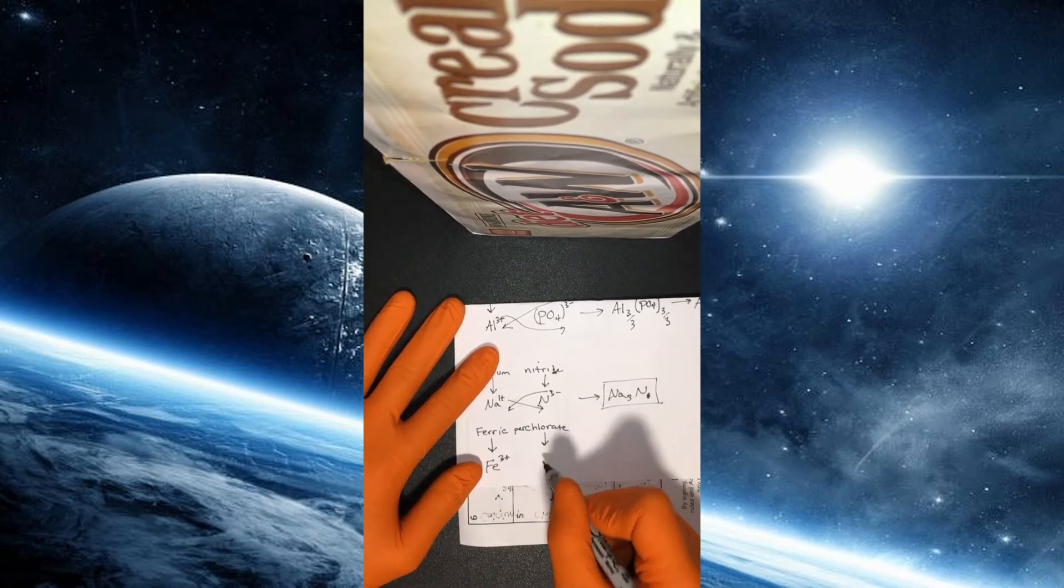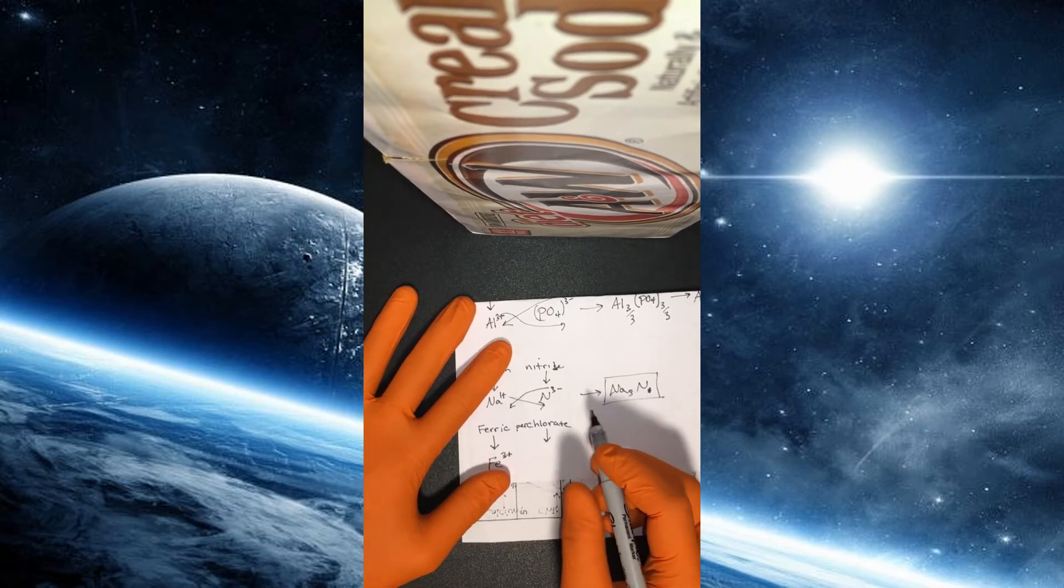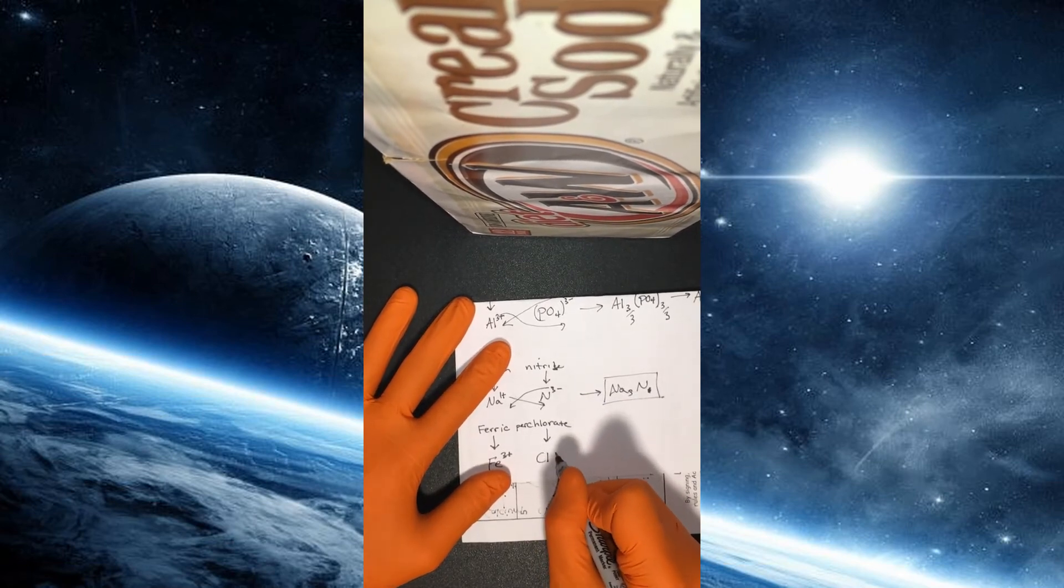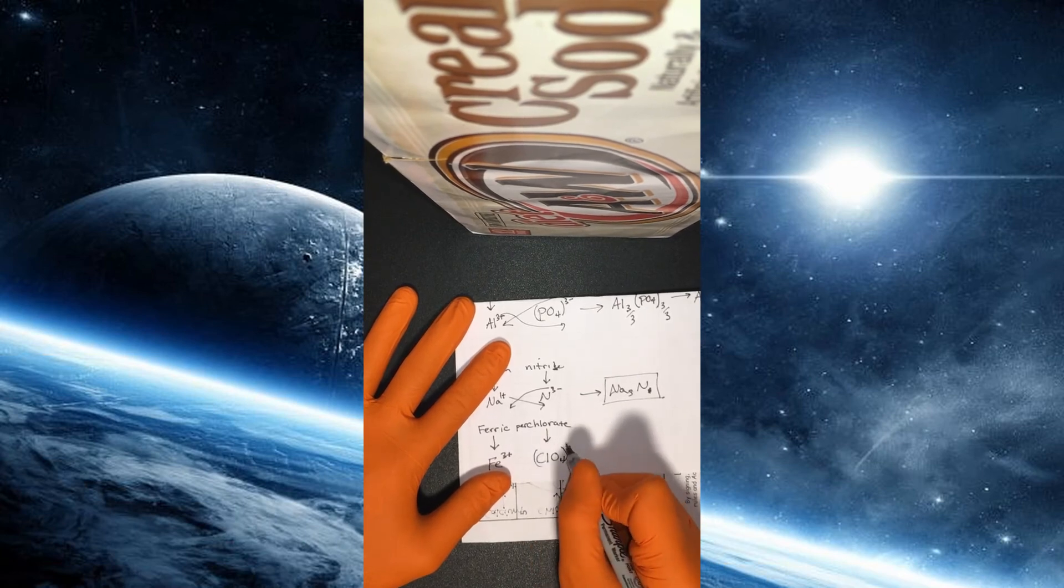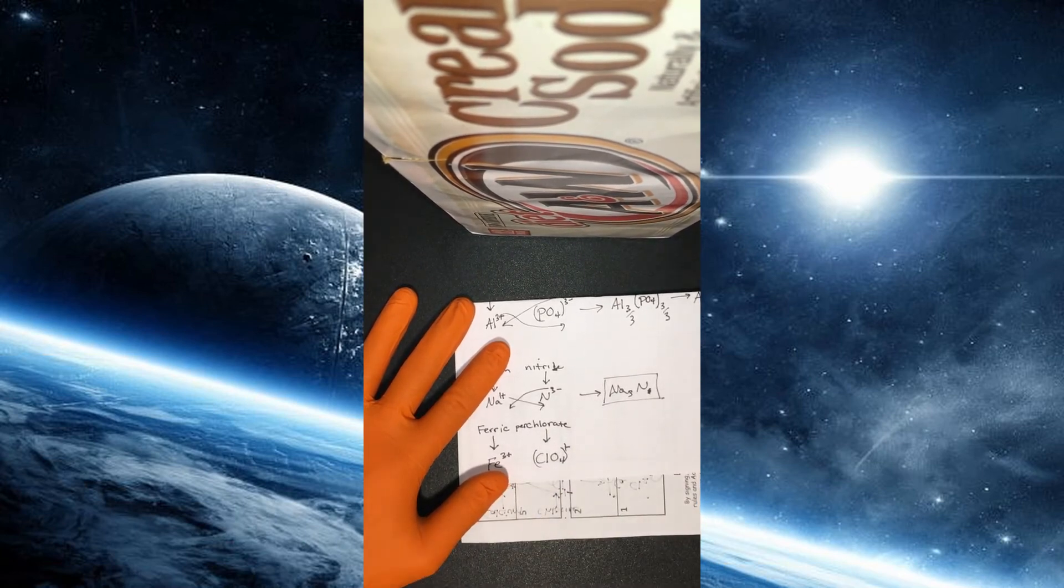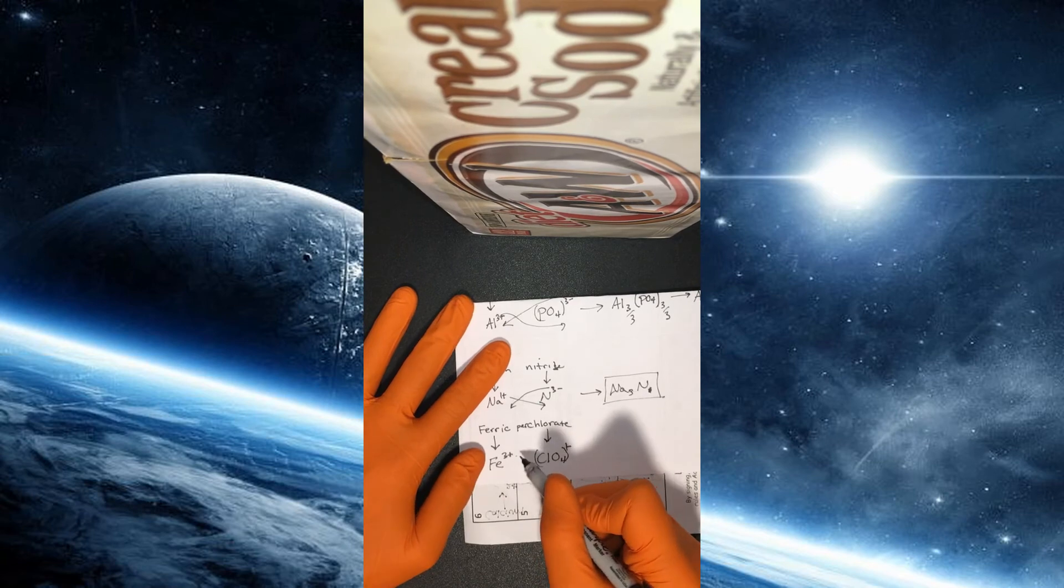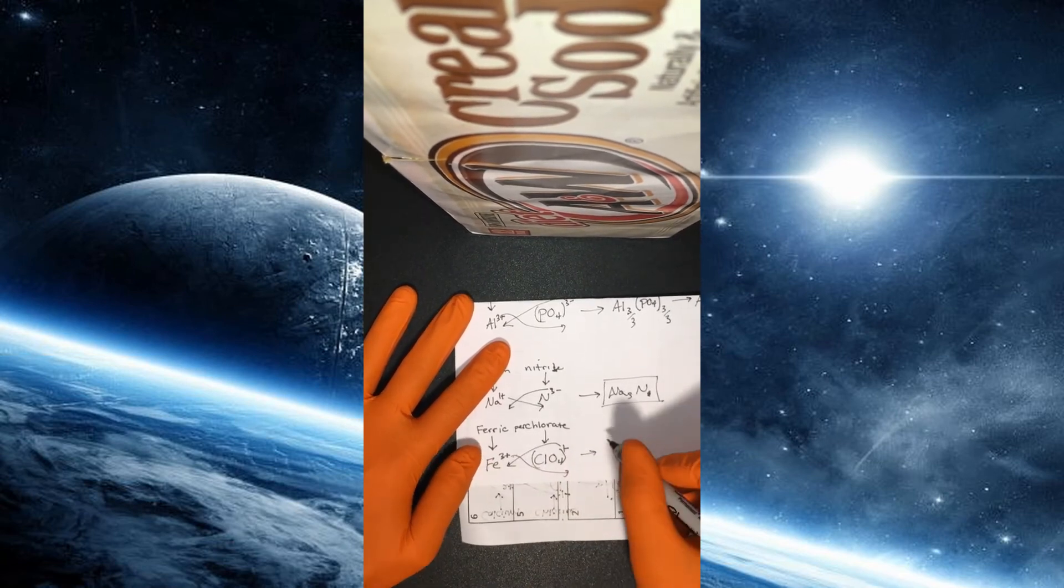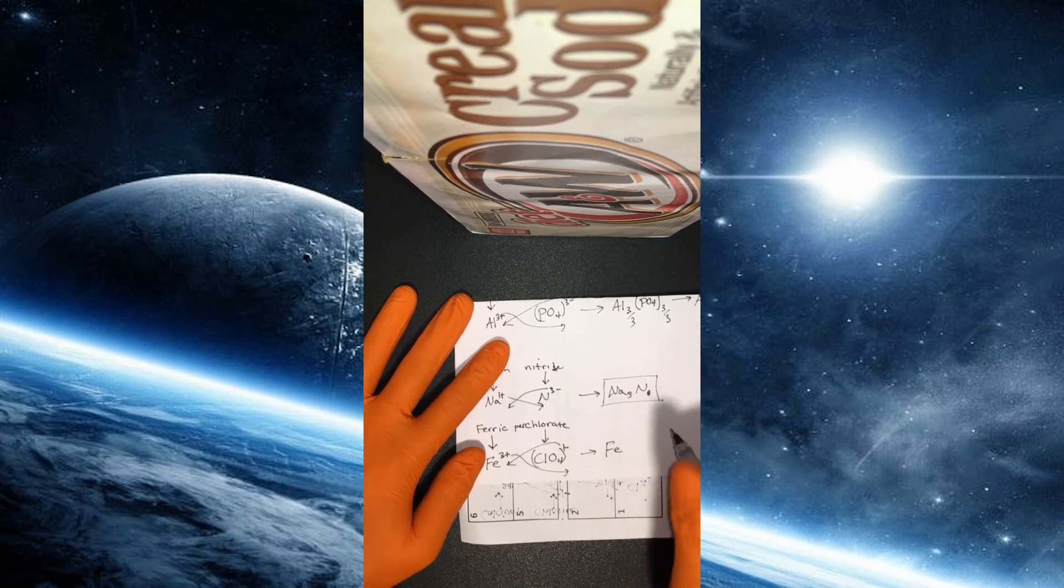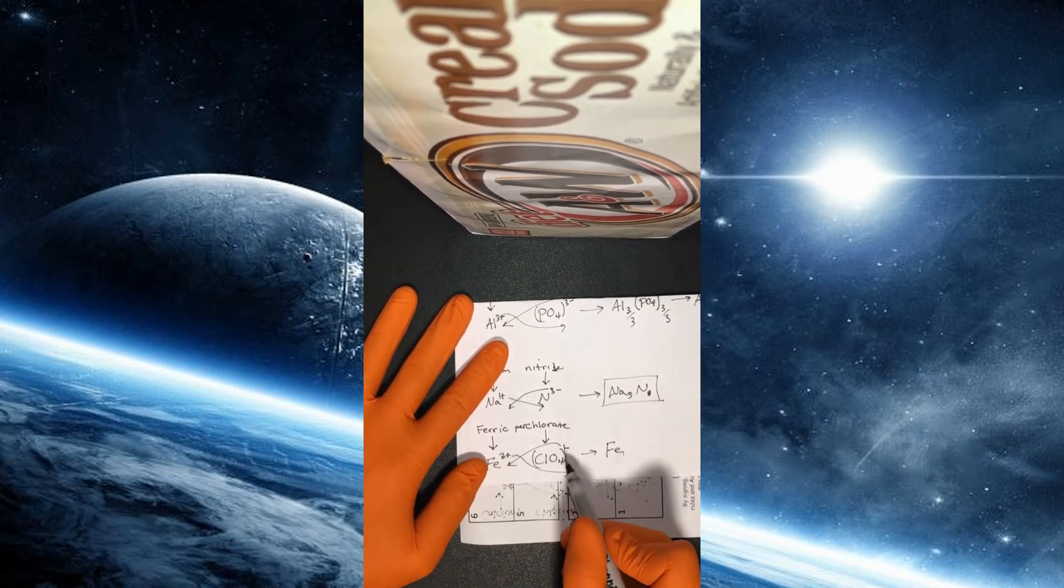Now perchlorate, this is another polyatomic anion. This is actually ClO4. And overall, it all has a minus one charge. And so then we can cross these down. One comes down here. And let's write our final answer.